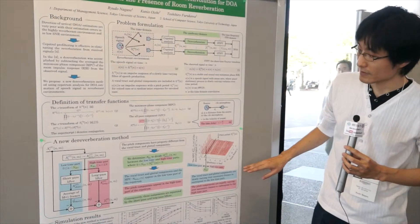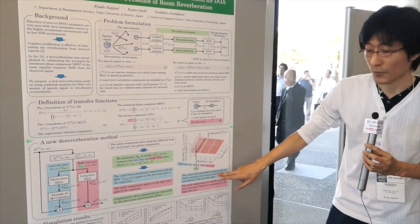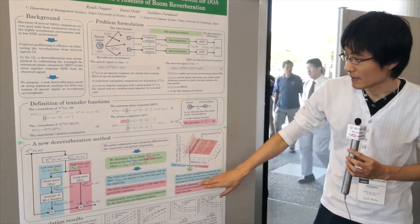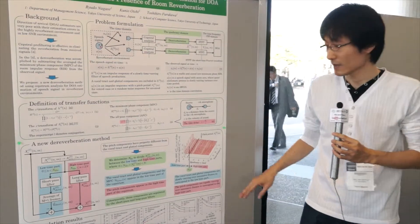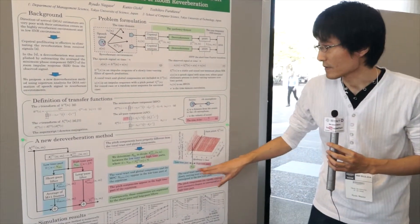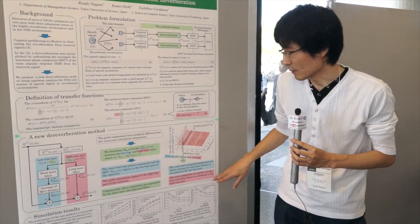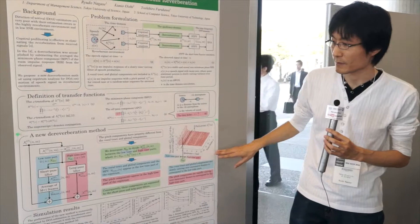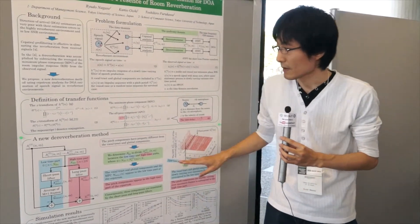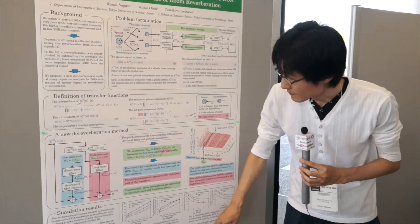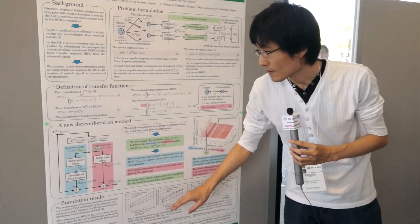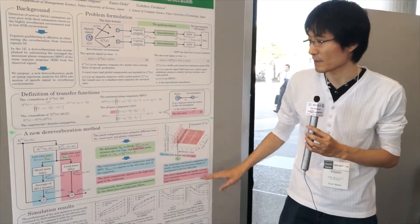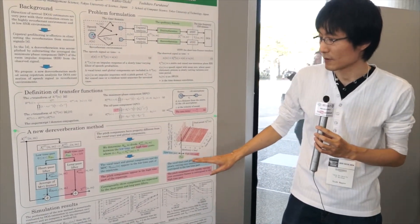The low time parts correspond to the vocal tract and spectral envelope components, which vary slowly over successive frames. The pitch components vary rapidly over successive frames and correspond to the high time parts. Consequently, these components are separated by short-time high and low lifters.